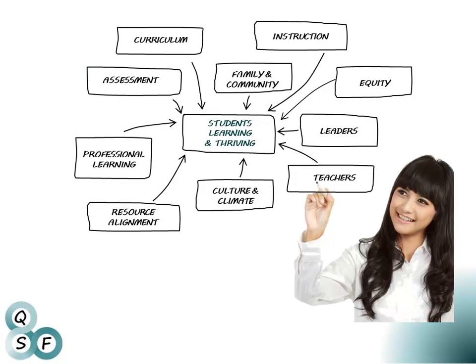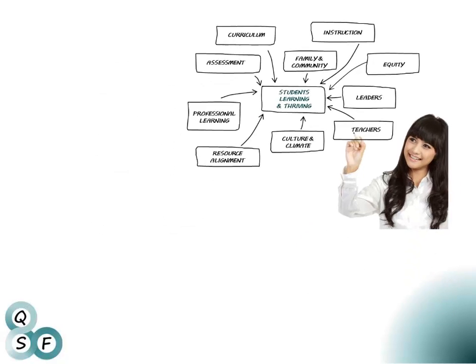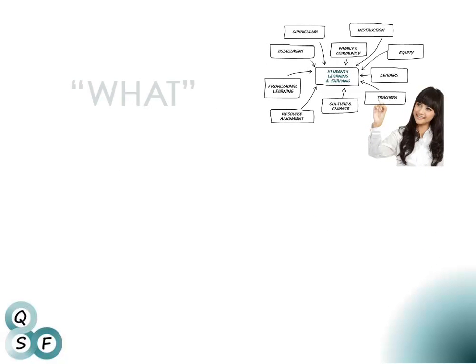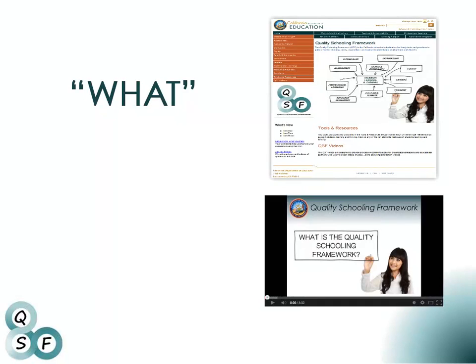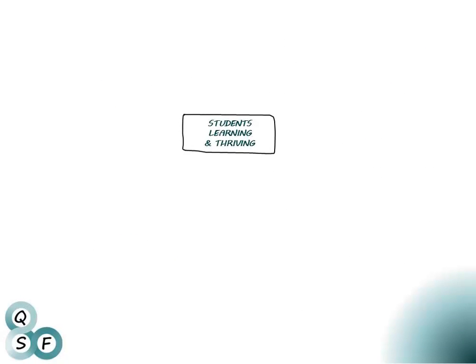The QSF identifies 10 elements that, when integrated, support students' learning and thriving. These elements are drawn from extensive research on the characteristics of effective schooling. They represent the what of quality schooling. The QSF website describes each of the elements and includes supportive resources such as tools for planning and measuring QSF elements. The QSF also includes a series of application videos and other resources to help you determine how you will integrate these elements in your school.